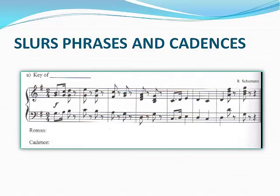For this example, we need to identify the key, find the phrases, find the cadence points, and label and name the cadence. Let's begin by finding the key. When you know the key, it helps to find those cadence points. The key of this passage is G major. In addition to using the key signature to identify the key, you'll notice how much of the music is G centered.